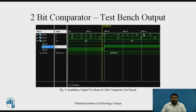The simulation output shows: this is the A signal, below that is signal B, and below that is the output signal Y. Individual bitwise outputs are also shown. Whenever A and B are equal, the output is 0 0 1. All four cases are shown here. Whenever A is greater, you can see Y[1] bit is 1. Previously when A and B were equal, Y[0] bit was 1 and remaining bits were 0, shown as 0 1 0. This is how you can verify the test bench using simulation.